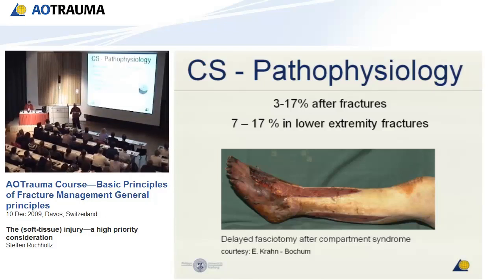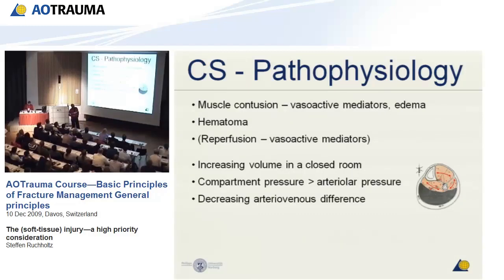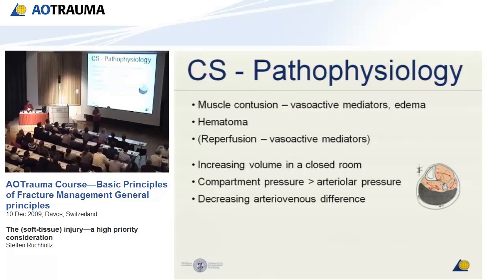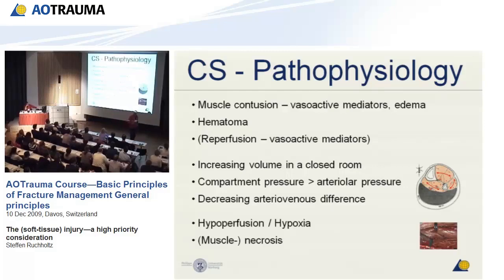Pathophysiology: muscle contusion leads to release of vasoactive mediators like histamine, causing vessel dilation, fluid into the interstitial space, and edema. Hematoma increases volume in the closed compartment — bounded by fascia and bone around the tibia. If pressure is too high, the small arteries are compressed, reducing perfusion. This causes hypoperfusion, more vasoactive substance release, rising pressure — a vicious circle. Within three to six hours, the muscle will die.